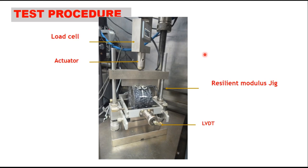This test setup is similar to that used for determination of ITS. The only difference is that the test equipment must be able to apply repeated load. The specimen is not loaded to failure; we apply only 5 cycles after conditioning of the specimen. This is what is called the resilient modulus jig, and the specimen is fitted into this jig.